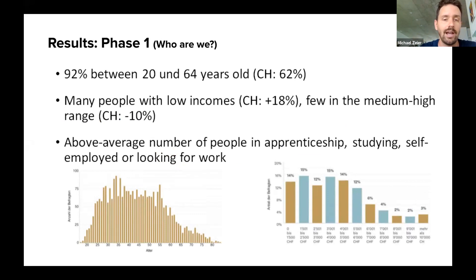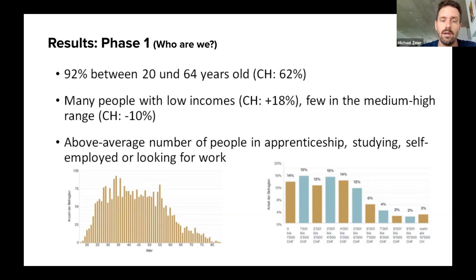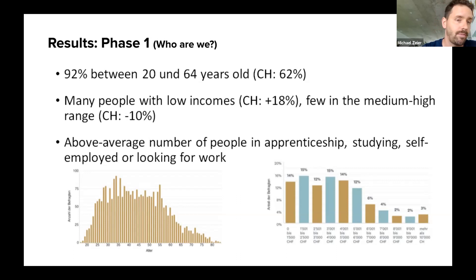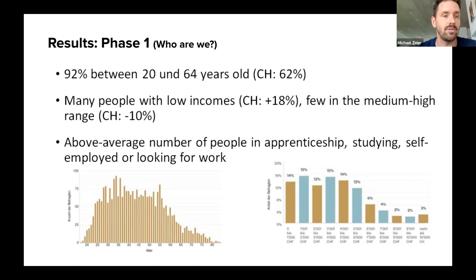We had more people with low incomes in that community, and fewer people in the medium-high income range. We also see an above-average number of people with professions who said they're still in apprenticeship, studying, self-employed, or looking for work — important context to keep in mind when we look at the results.